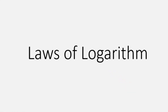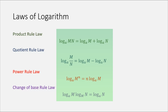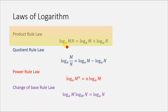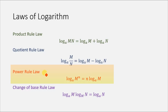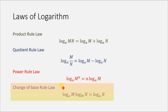Today we are going to learn about the four basic rules of logarithm, also known as the four basic laws of logarithm, and we are going to prove each one. The first rule is the product rule: log base a of mn equals log base a of m plus log base a of n. The second rule is the quotient rule: log base a of m/n equals log base a of m minus log base a of n. The third is the power rule, and the fourth is the change of base rule.